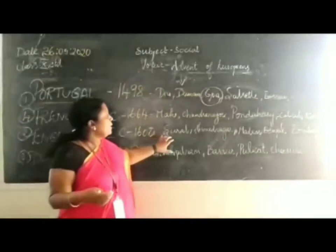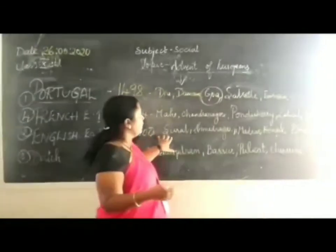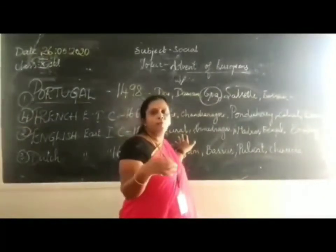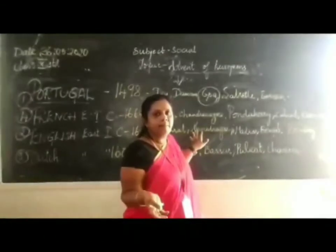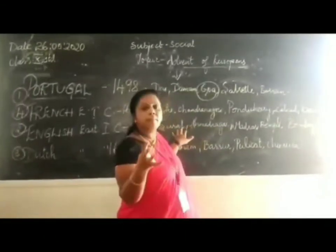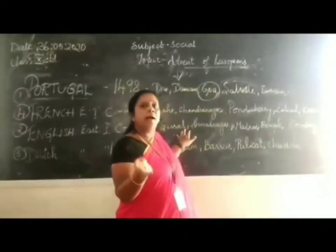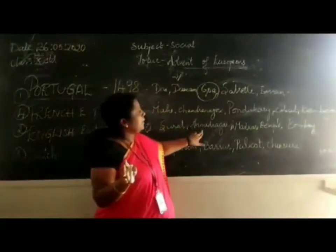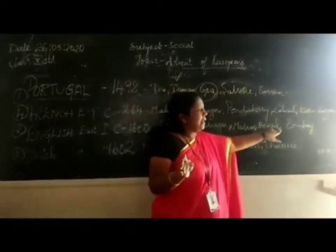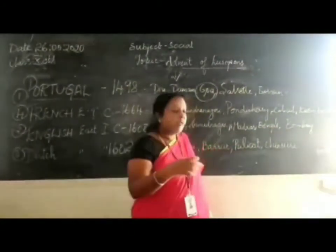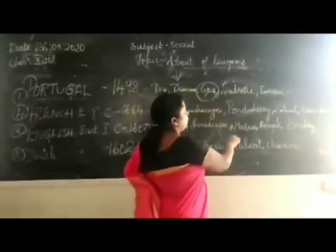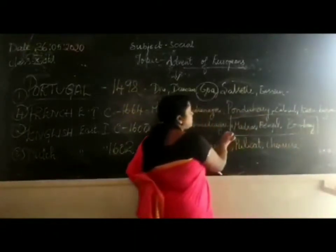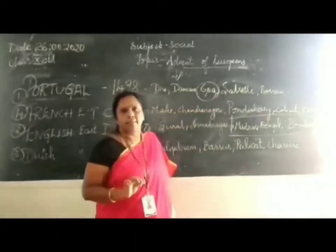Later on, when they started coming in around 1600, they bought Mumbai as a gift from the Portuguese — given to King Charles II — and they got various islands. Apart from that, there were trading centers in Surat, Ahmadnagar, Madras, Bengal, and Bombay. Later on, Madras, Bombay, and Bengal became the three presidencies of British power in India.